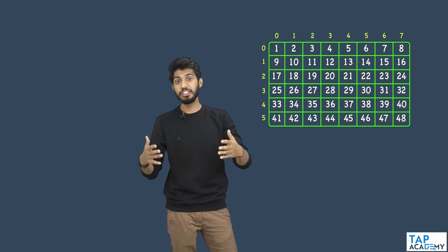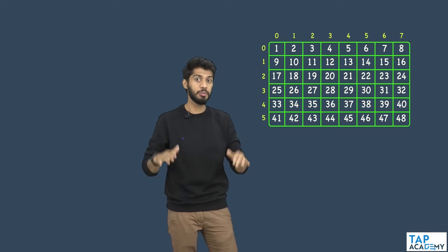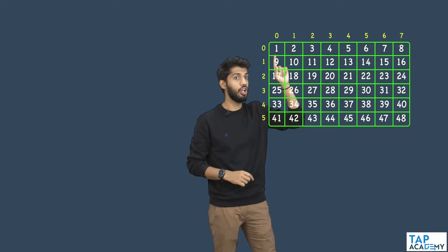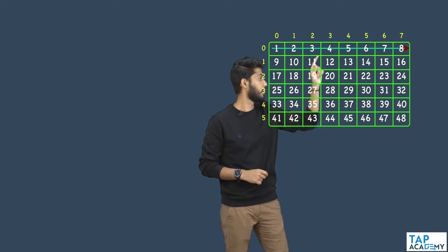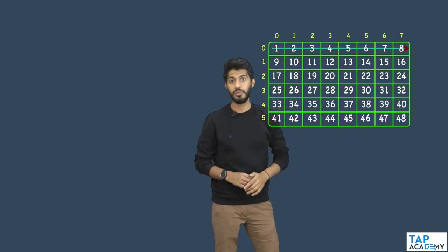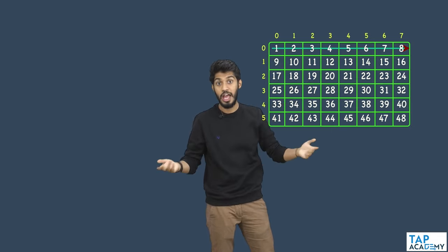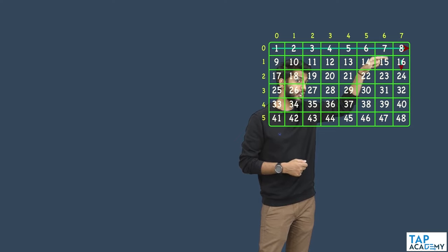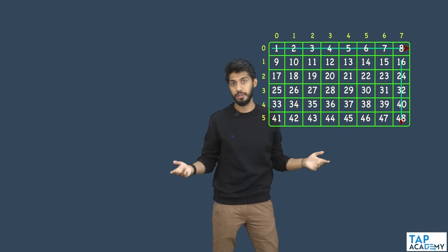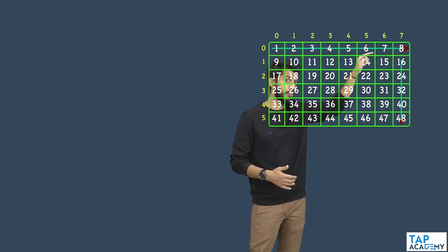Let's break down the spiral order step by step. First, print all numbers from left to right — that's 1 through 8. Then print from top to bottom — 16, 24, 32, 40, 48. So the first step is left to right, and the second step is top to bottom.